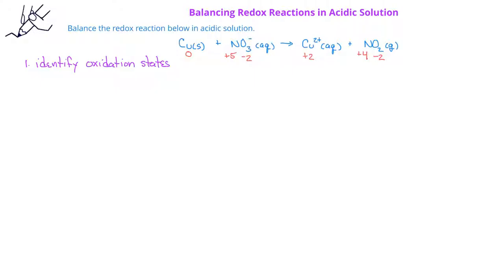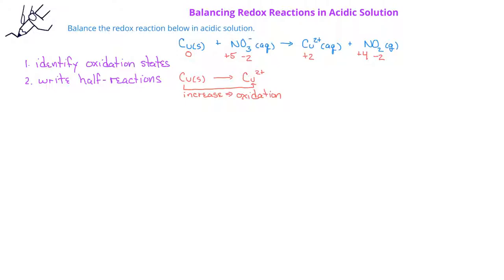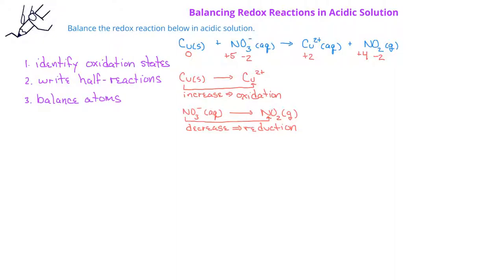Next, we break down the redox reaction into its two half reactions. We see for the copper that we have copper zero on the reactant side and copper 2 plus ions on the product side. That's an increase in oxidation state, which means that this is our oxidation half reaction. For the reduction half reaction, we would have nitrate on the reactant side and NO2 gas on the product side. Since the nitrogen underwent a decrease in oxidation state, that indicates that this is the reduction half reaction.